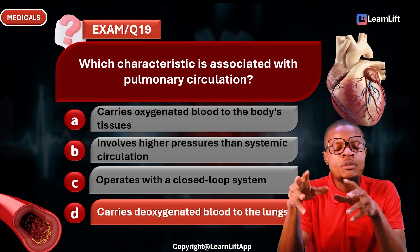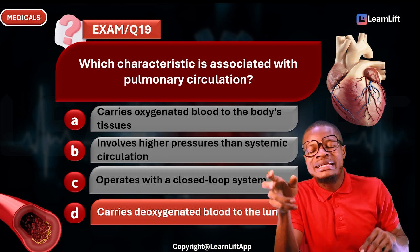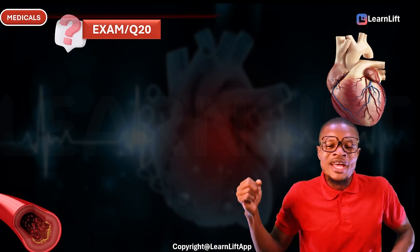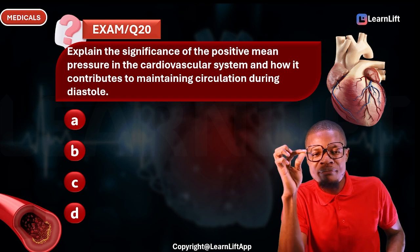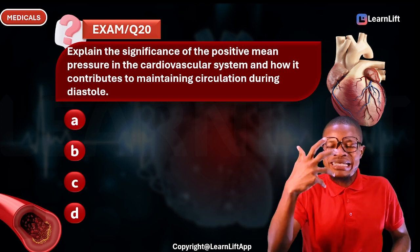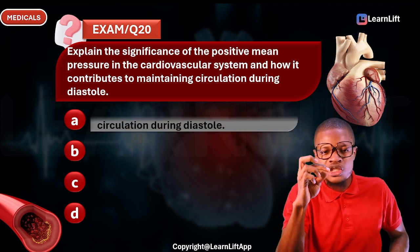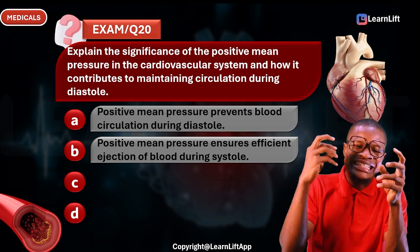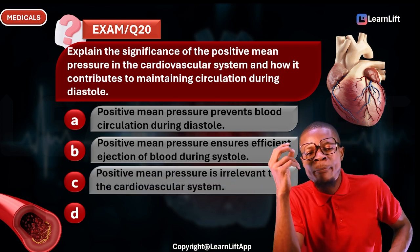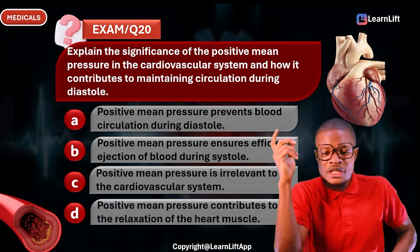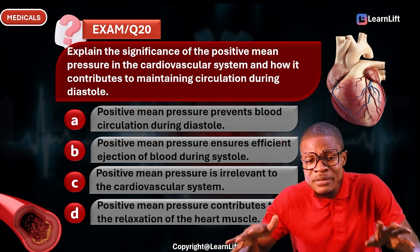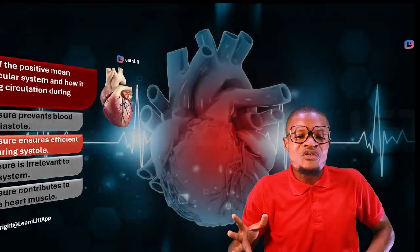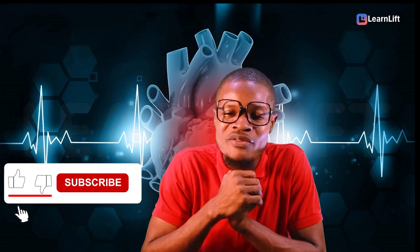Regarding pressure: systemic circulation has higher pressure while pulmonary circulation operates at lower pressure. Question twenty: Explain the significance of positive mean pressure in the cardiovascular system. Option A: positive mean pressure prevents blood circulation during diastole. Option B: positive mean pressure ensures efficient ejection of blood during systole. Option C: positive mean pressure is irrelevant to the cardiovascular system. Option D: positive mean pressure contributes to relaxation of the atria. The correct answer is Option B — positive mean pressure ensures efficient ejection of blood during systole. This brings us to the end of the top 20 questions on introduction to the cardiovascular system.